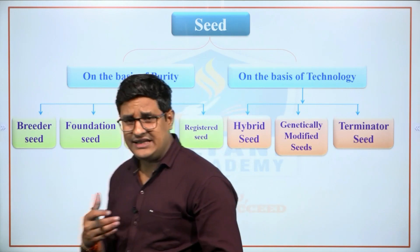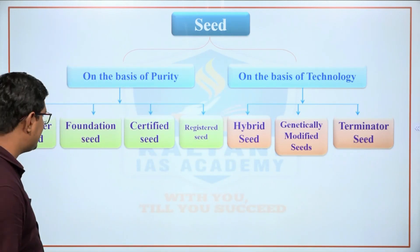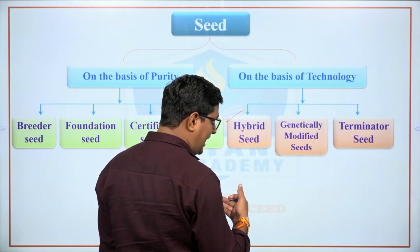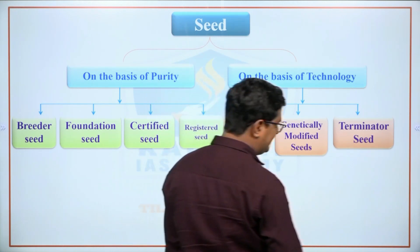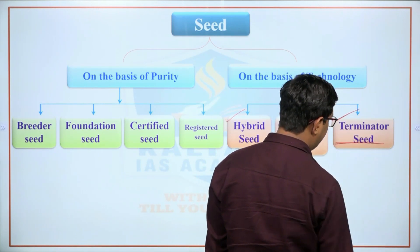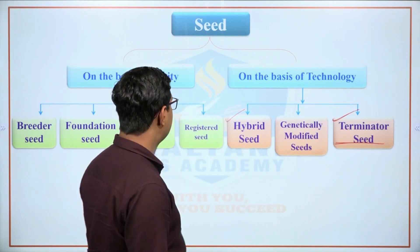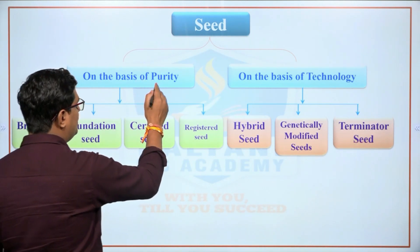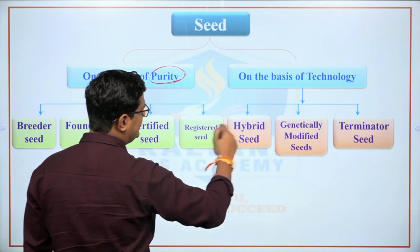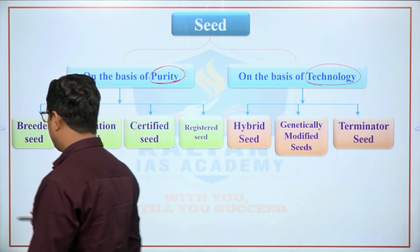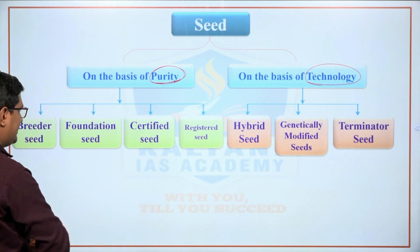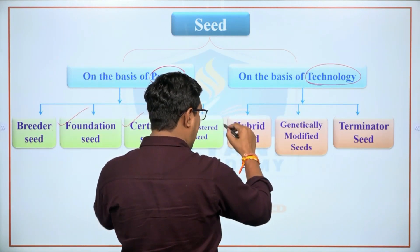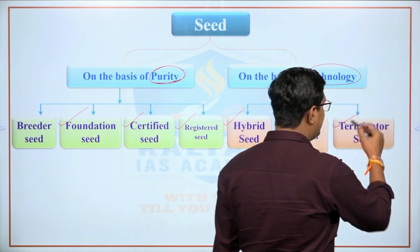Seeds can be classified based on purity and technology. Based on purity, there are four types: breeder seed, foundation seed, certified seed, and registered seed. Based on technology, there are hybrid seeds, genetically modified seeds, and terminator seeds. These definitions and their importance are important for MCQ-based exams.